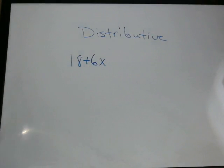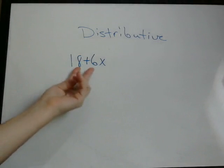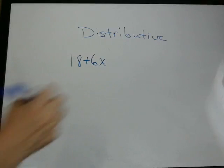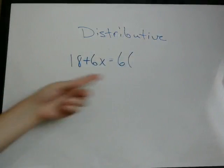And if you're unsure on how to find those factors, look at my video on divisibility on my Facebook page. So we look at these two and we know that 6 can be divided into both 18 and 6. So we're going to pull the 6 out. Now we just have to decide.